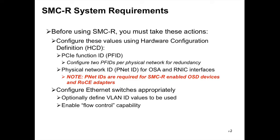We use the OSA configuration to dynamically start and activate the RoCE Express adapter cards. You do have to set up the physical network IDs in the hardware configuration definition to tie the RoCE Express cards with the OSA cards. You also need to configure your Ethernet switches appropriately. If you decide to use optional VLAN values for your OSA — which will be inherited by the RoCE cards — you would have to also enable that on the Ethernet switch. We also recommend using the flow control capability.